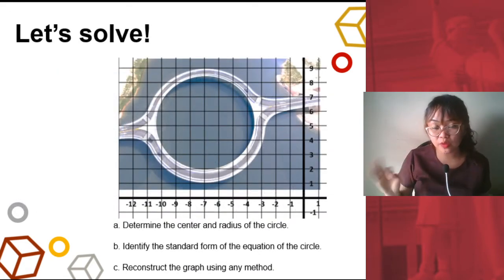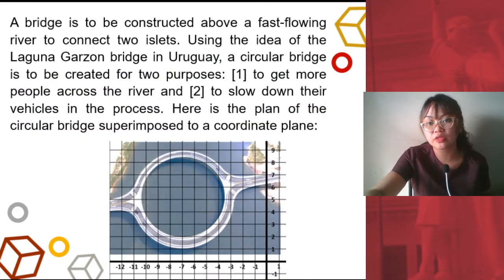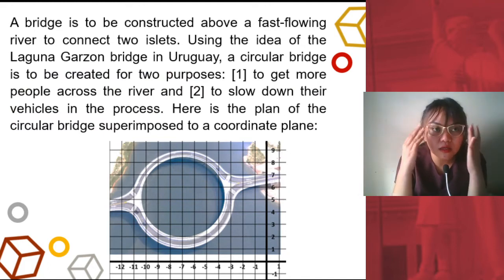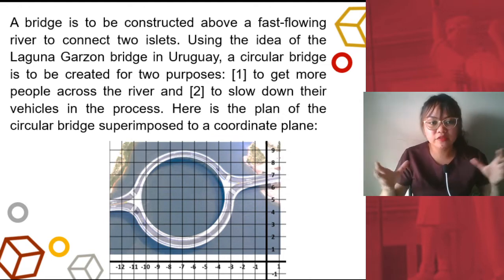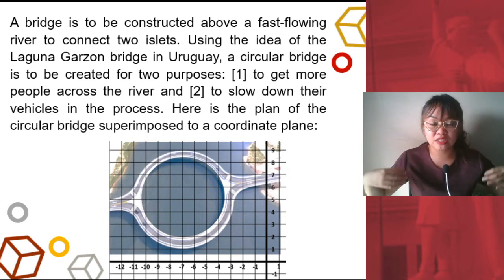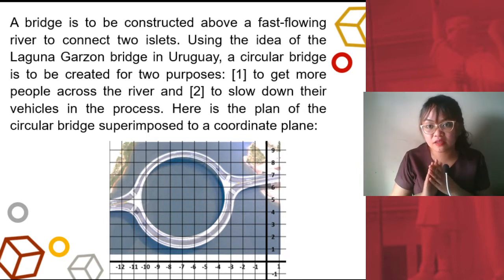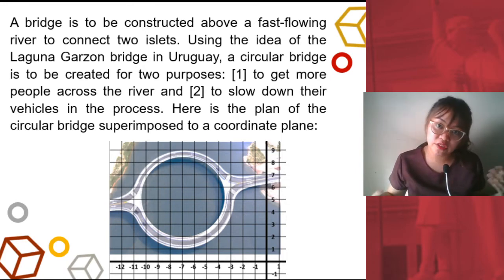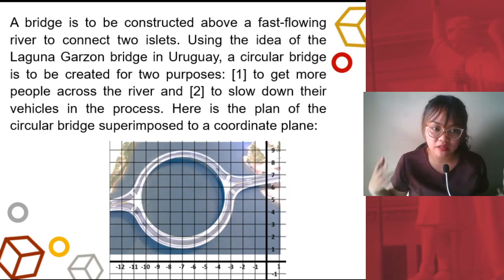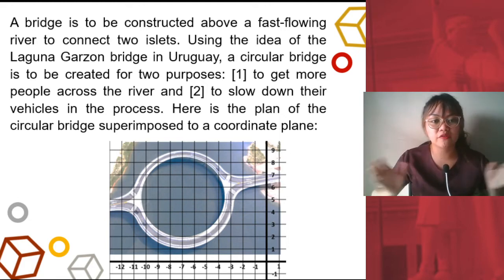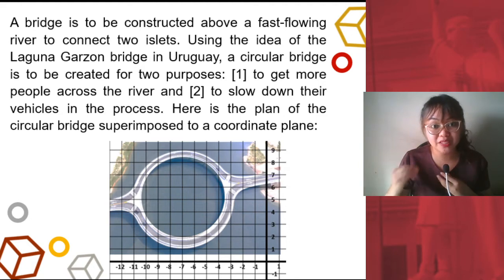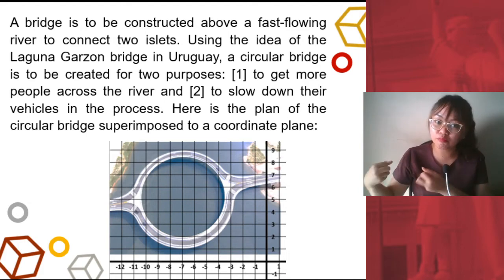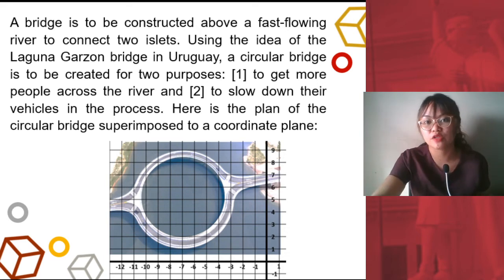We have three questions for this problem. The situation is there is a bridge to be constructed. When you have a circular bridge, you would be able to get more people across, because the curvature of the bridge would allow more vehicles to pass through at a certain time, instead of just a straight one. The second purpose is to slow down the vehicles. As you've learned in physics, centripetal and centrifugal force would act on the vehicles turning on the curvature of the bridge, slowing down their movement — instead of a straight bridge where speeding is very prone.